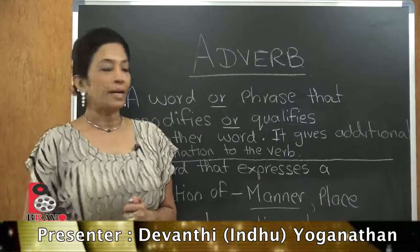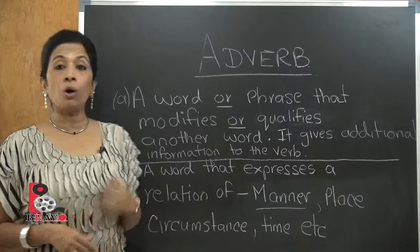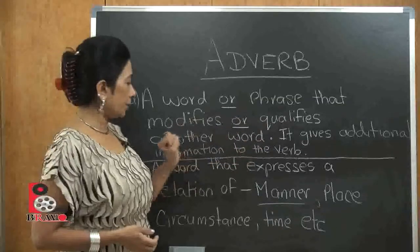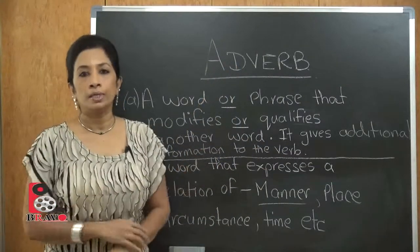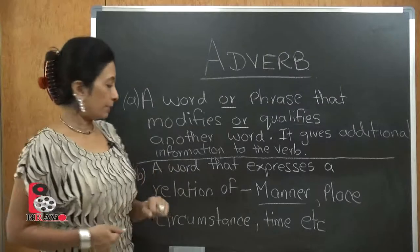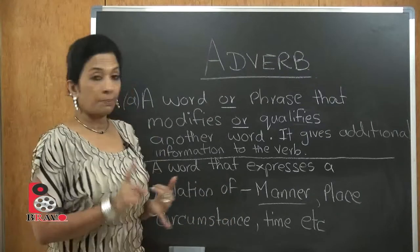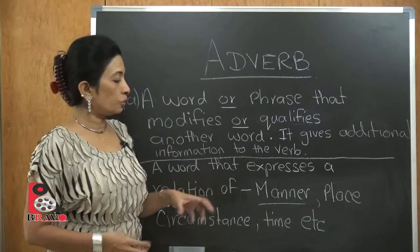The adverb has two meanings or two places where we can use it. First, it is a word or phrase that modifies or qualifies another word. Second, it gives additional information to the verb — it adds value to the verb used in the sentence. Another explanation: a word that expresses a relation to the mannerism of a person, place, circumstances, time, and so on.